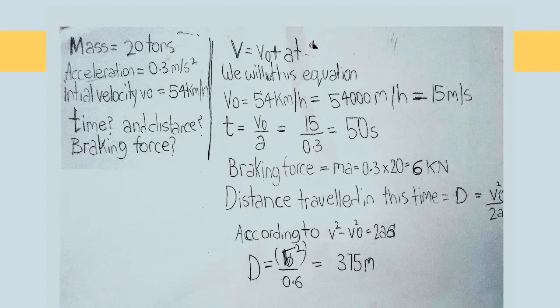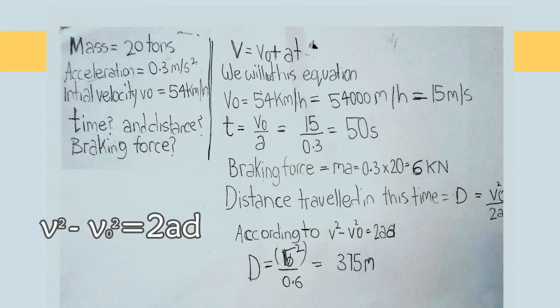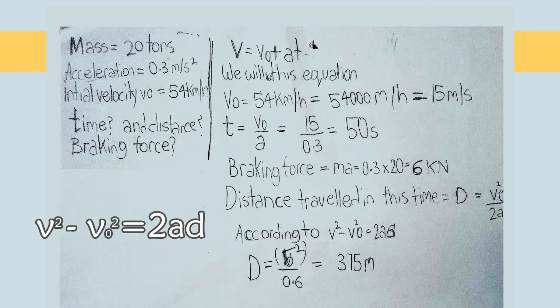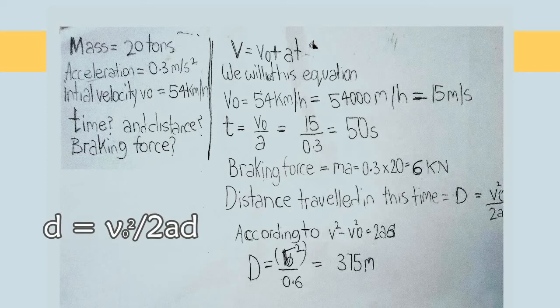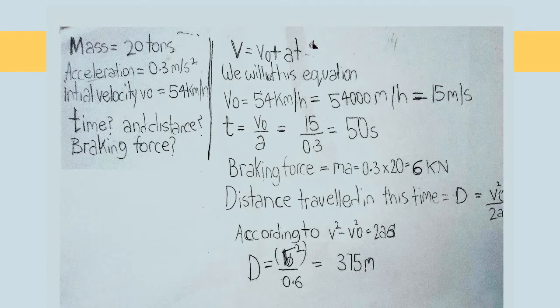In order to find the distance, we will use the formula V squared minus V0 squared equals 2AD. So, distance D is equal to V0 squared divided by 2A, D equals 15 squared divided by 0.6 which is equal to 375 meters.